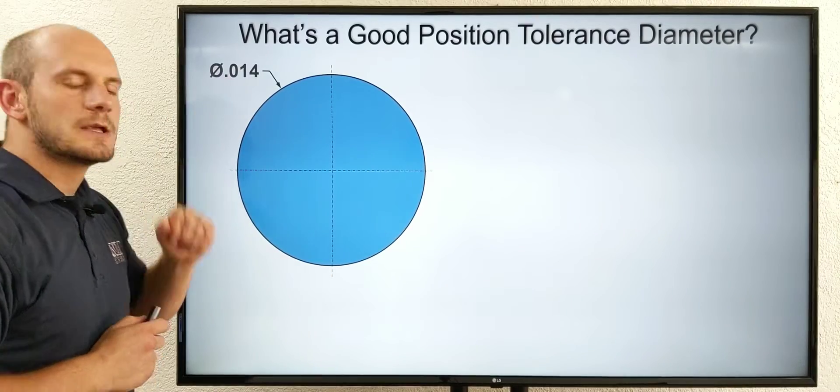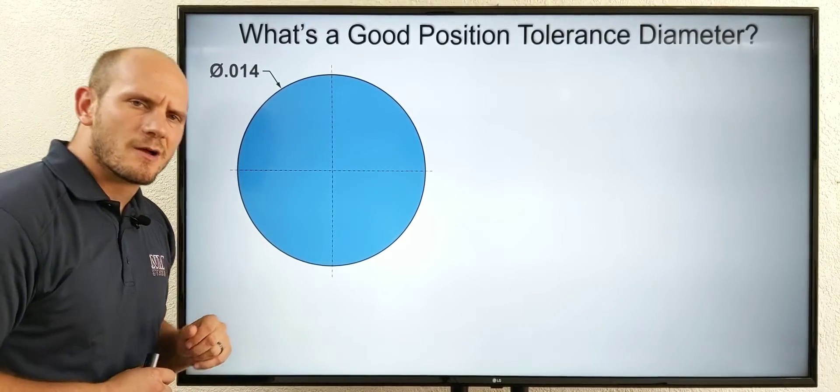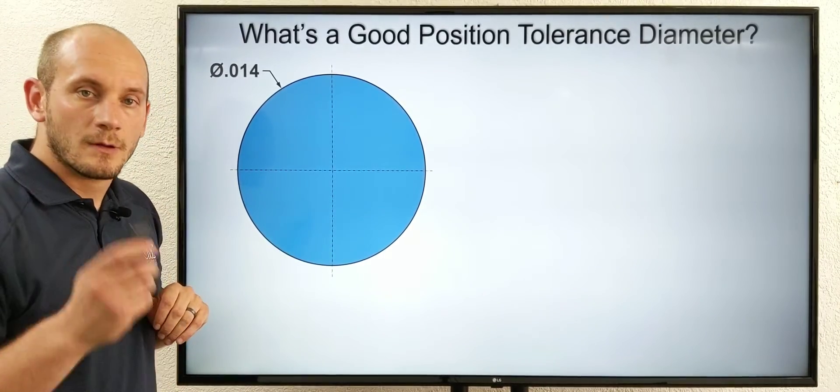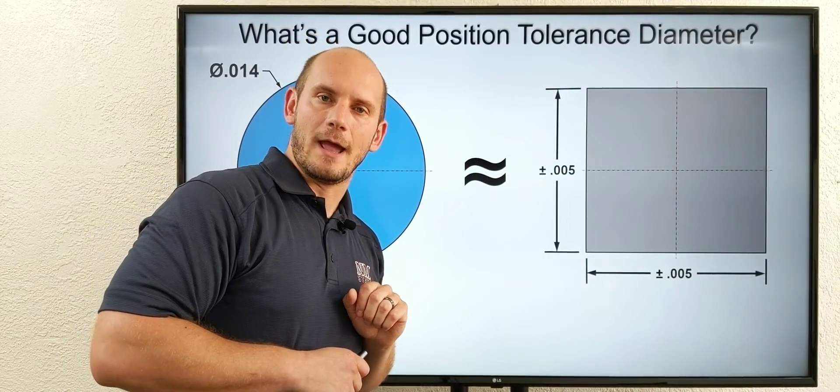My recommendation is 14,000. You might be thinking it seems kind of random, kind of arbitrary. Why 14,000? Well, it's actually because it's equivalent to that plus or minus five that we just looked at.